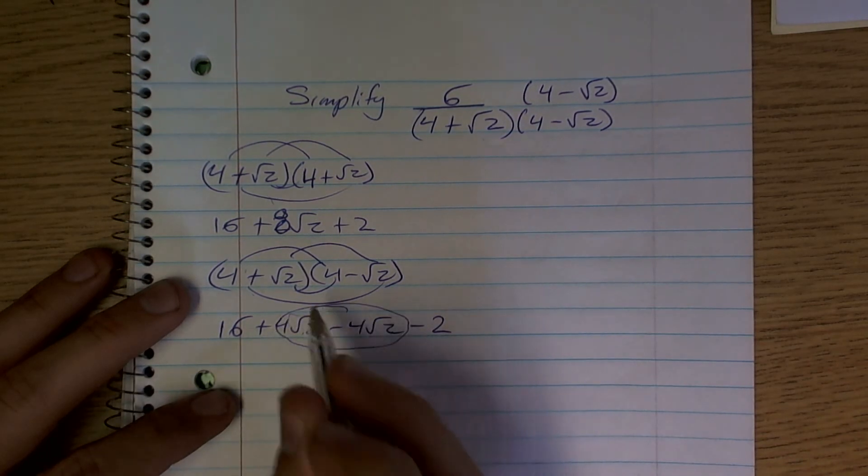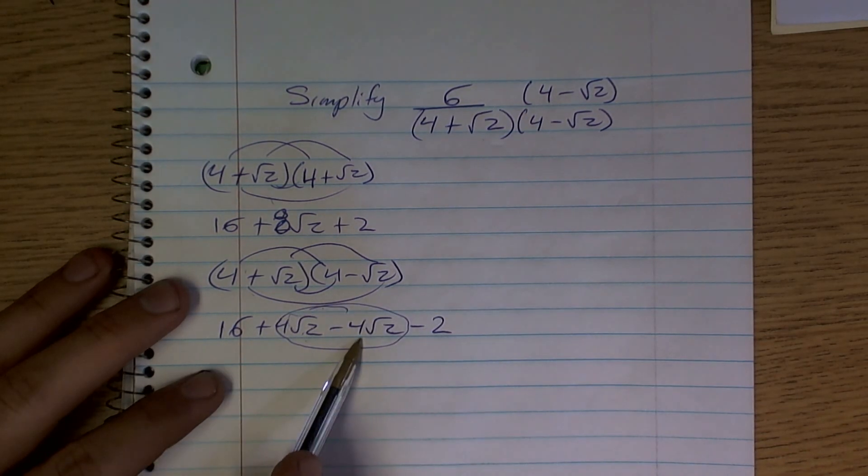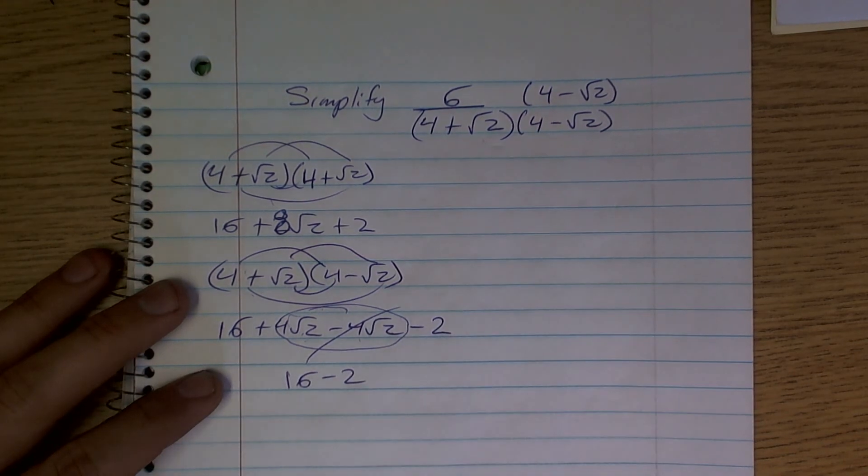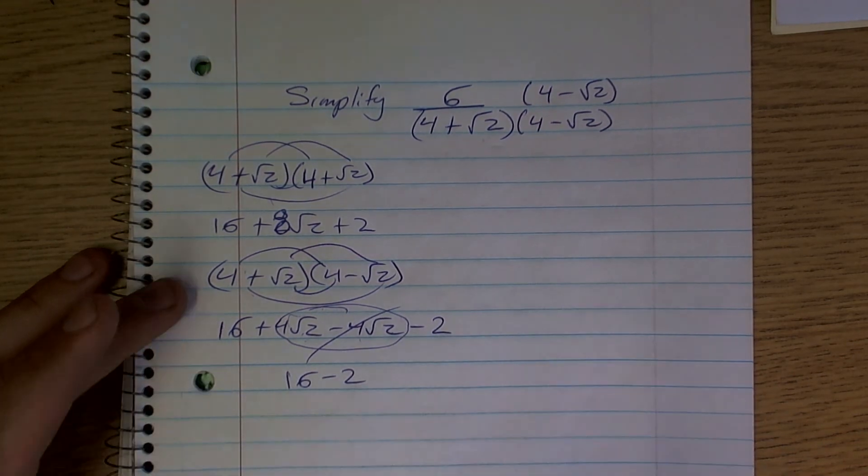Well, what you notice now is what happens to your inner terms. They now have done what? 4 radical 2 minus 4 radical 2. They have to cancel out. So now, I'm just left with 16 minus 2. You see that? See the big difference?